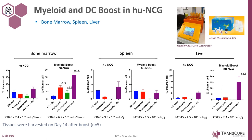Peripheral blood is great — it's easy to interrogate without sacrificing the animals — but it's really just the tip of the iceberg. We know that the major organs are indeed infiltrated with human immune cells. Thanks to the GentleMACS Octo Dissociator from Miltenyi in combination with various tissue dissociation kits, we can get cell suspensions out of any organ from these animals. We have characterized the humanization rate and quality of the spleen, liver, bone marrow, intestine, brain, and lung — a comprehensive picture of what is inside those animals, boosted or non-boosted. All these compartments provide a source of human immune cells that can be mobilized when you challenge those animals, for example with a tumor.